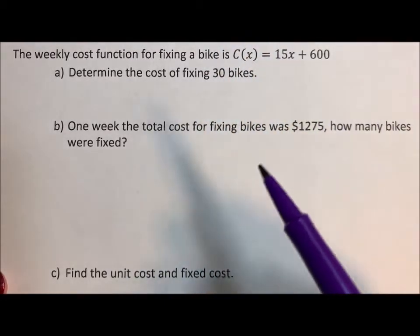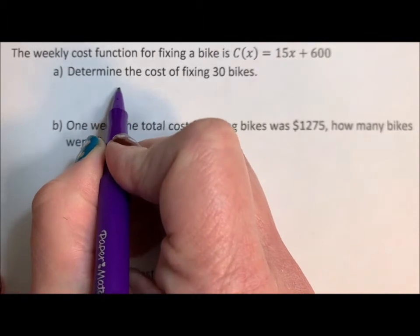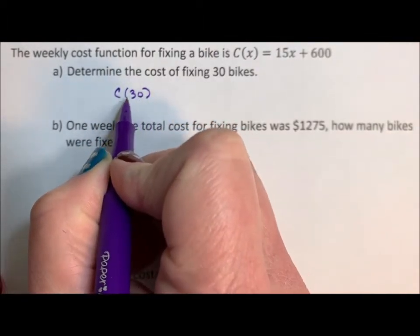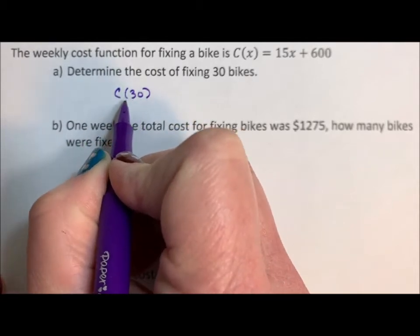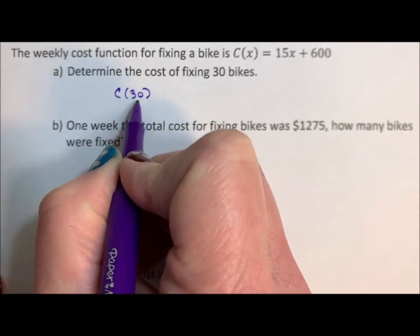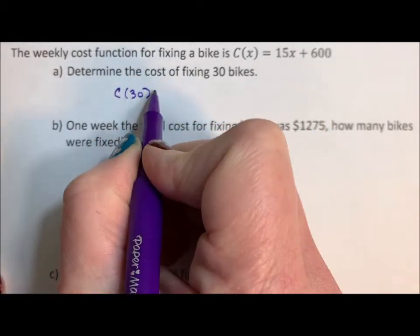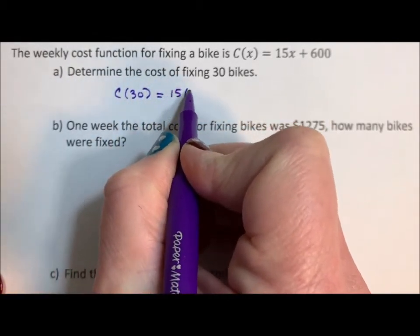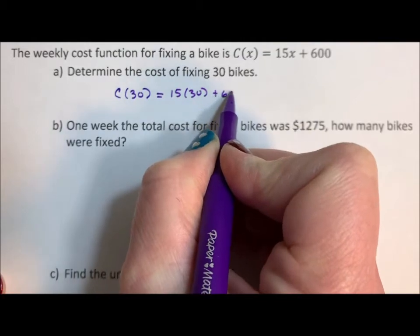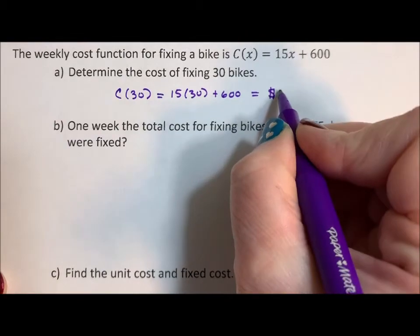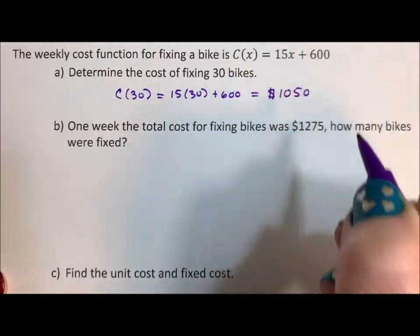So determine the cost for fixing 30 bikes. Well, C(30) - this isn't multiplication, this is function notation, this is input - it's in the parentheses. So the cost for 30 bikes is 15 times 30 plus 600, which is going to be, dollar sign because we label all of our answers, $1,050.